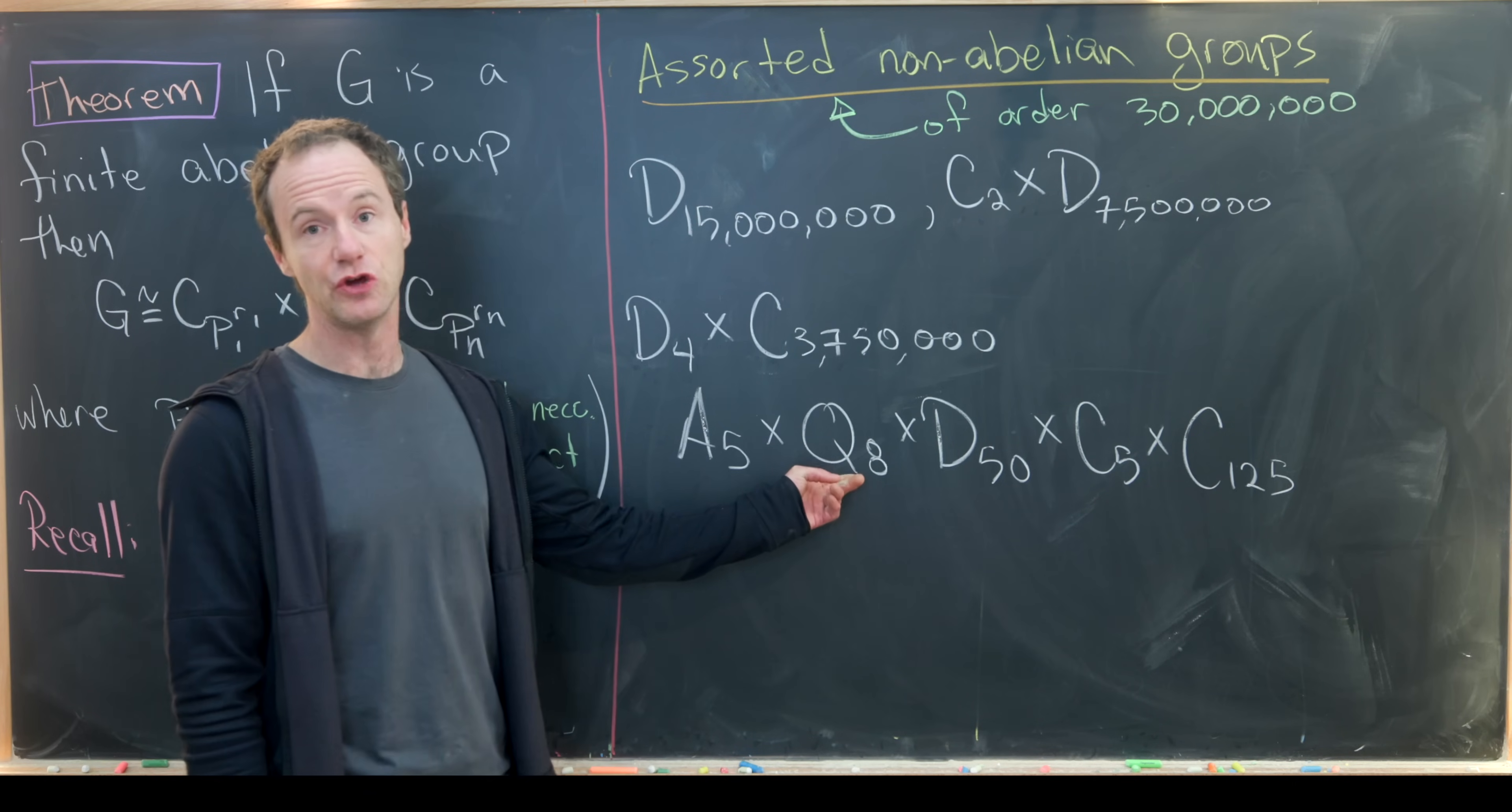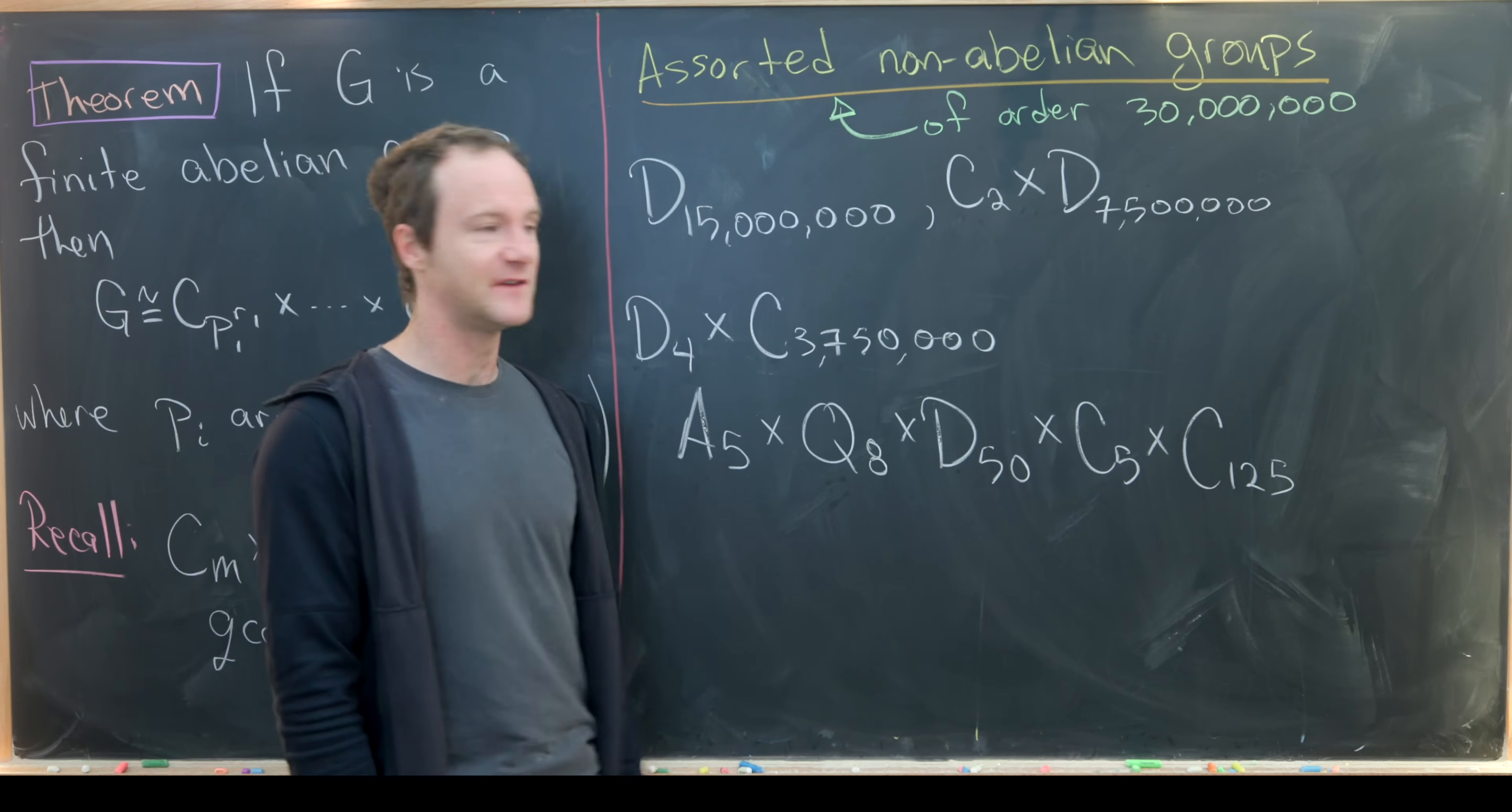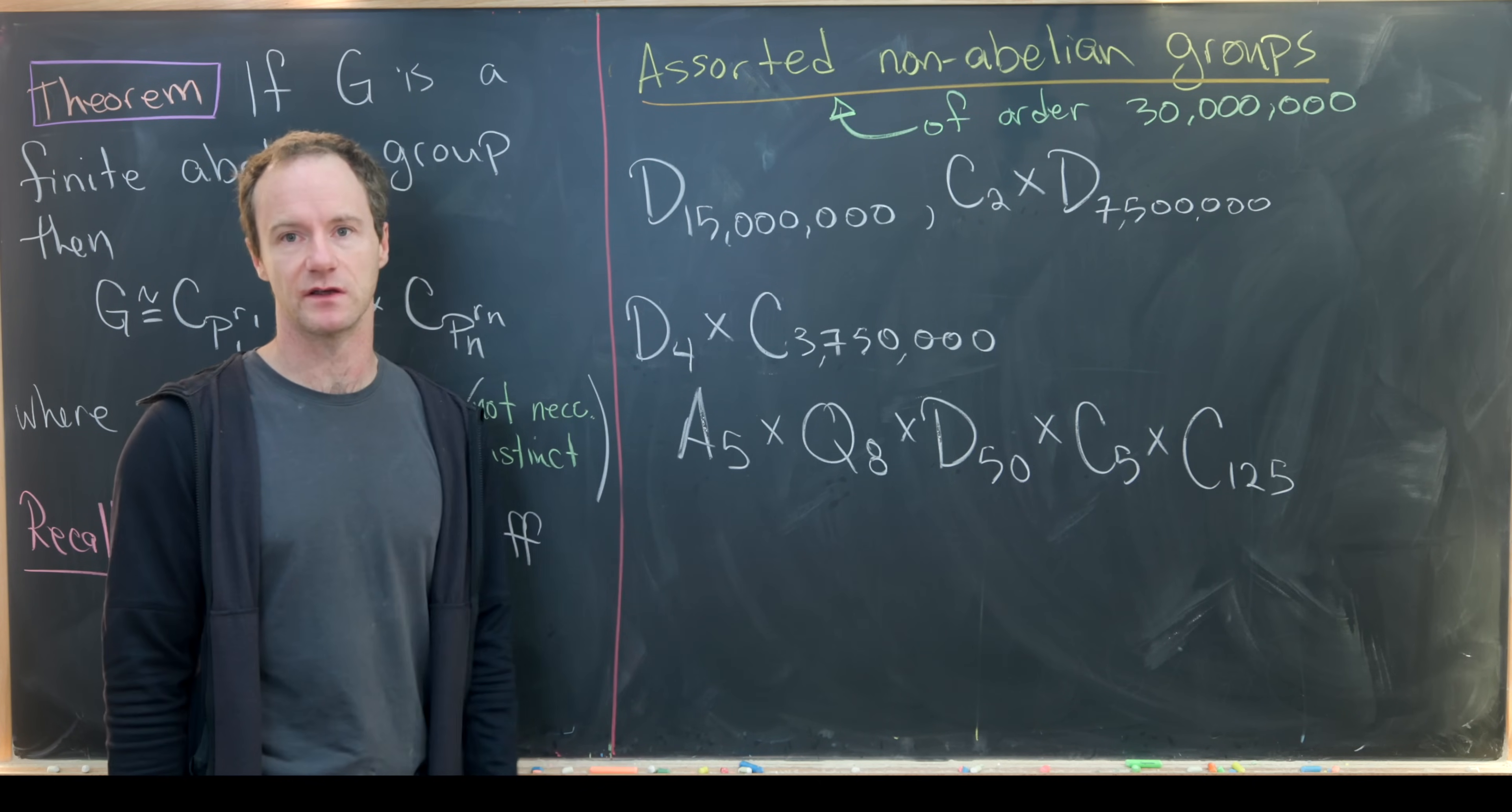What's interesting about the quaternions is they are really important in computer graphics. Then we've got D50, all symmetries of a 50 gone, and then C5 and C125. So here's a nice assorted list of non-abelian groups.